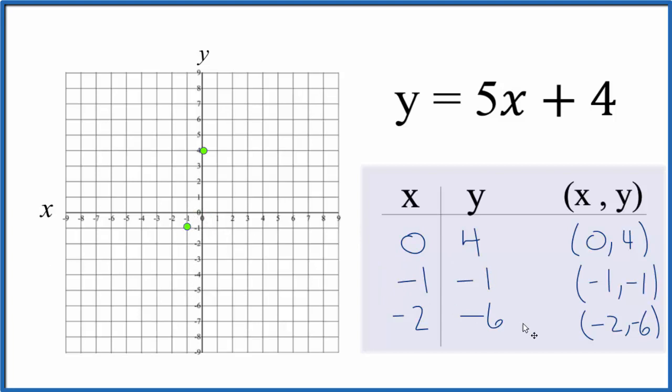We can stop here and draw a line, but that third point will make sure we got this right. Negative 2, negative 6. So negative 2x, negative 6y, and they all line up.